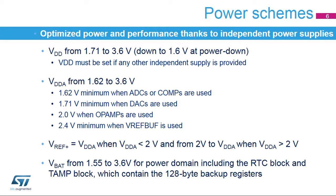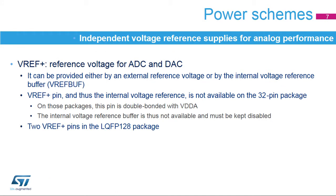A backup domain is supplied by VBAT, which must be greater than 1.55 volt. The backup domain contains the RTC, the 32.768 kHz LSE external oscillator, and the TAMP block containing the 128-byte backup registers. The ADC and DAC voltage references can be provided either by an external supply voltage or by the internal reference buffer.